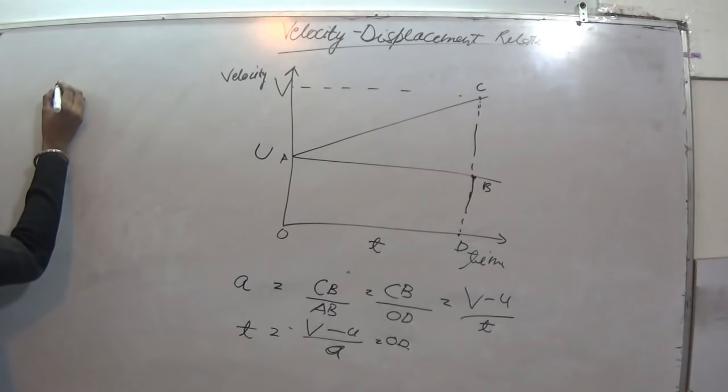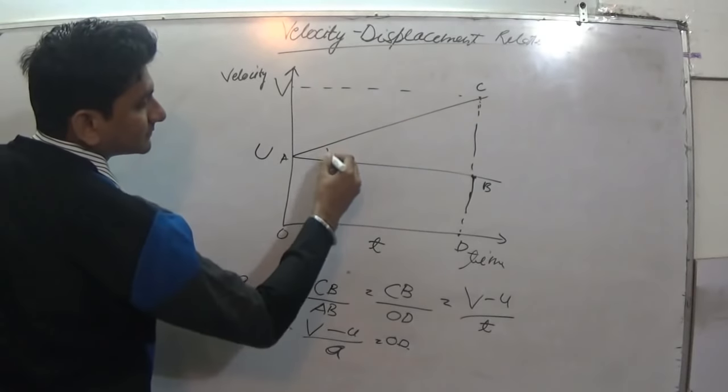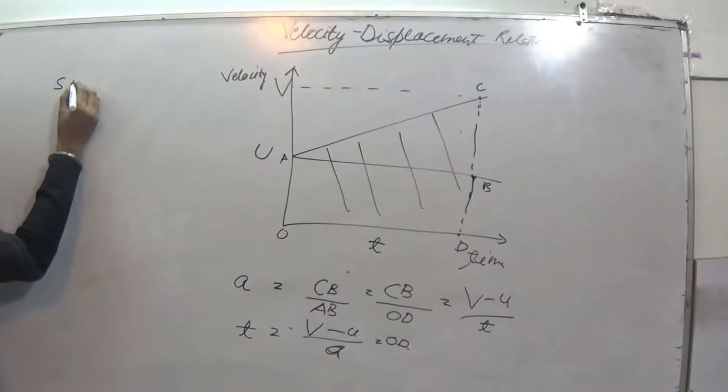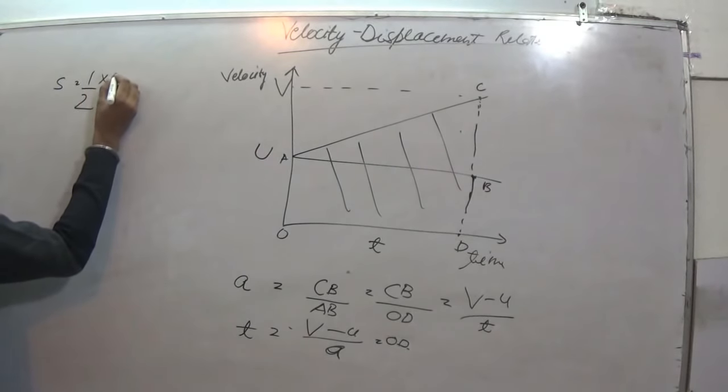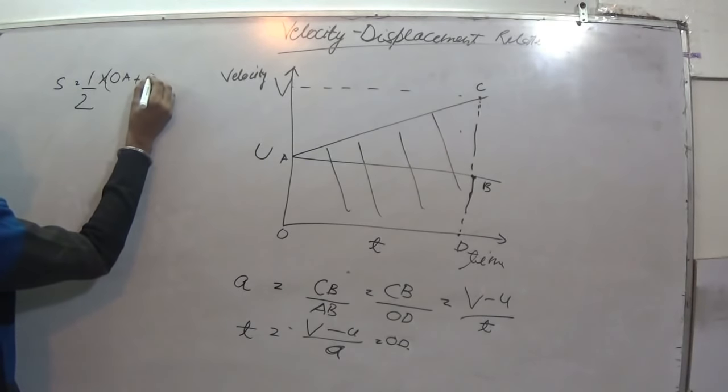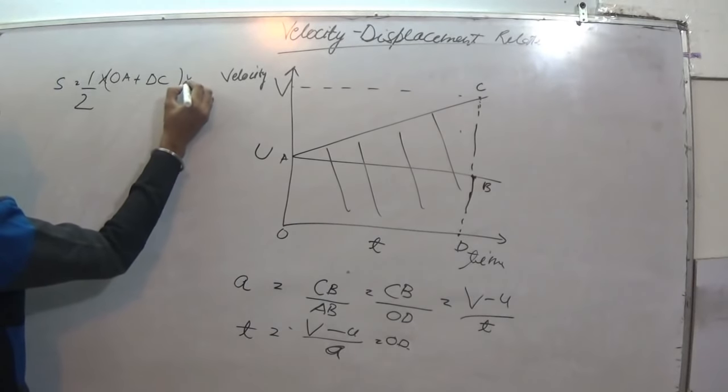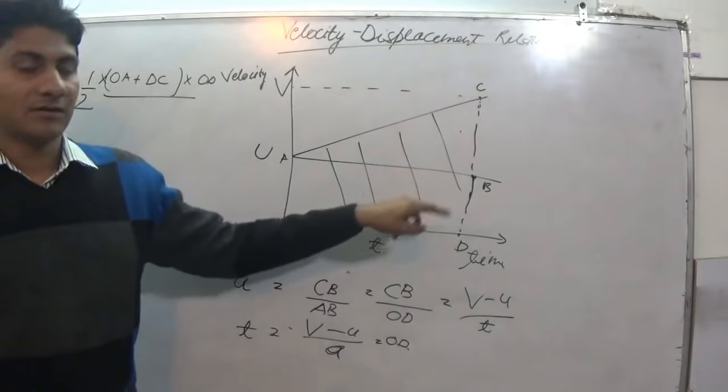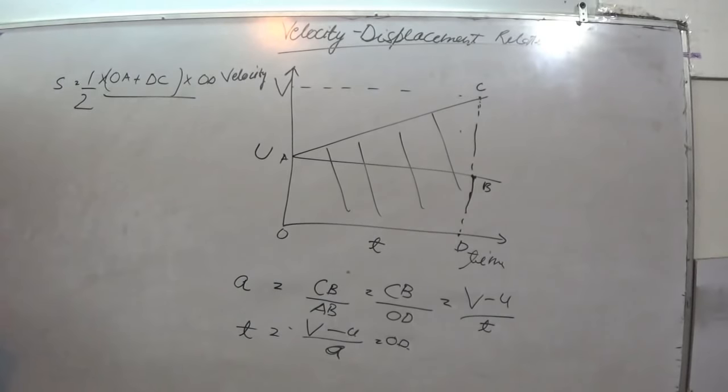So we have s is equal to area of this trapezium. This again we have s is equal to 1 by 2 multiplied by OA plus DC multiplied by OD. Why? This is the area of trapezium, we just are changing the formula.